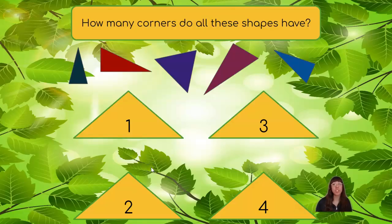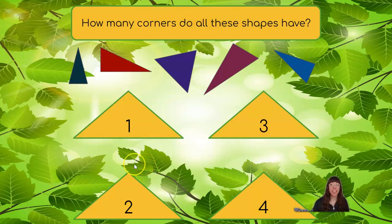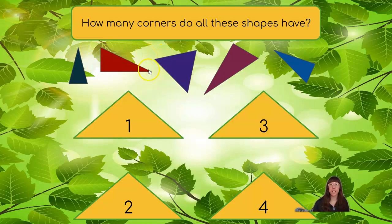How many corners do all of these shapes have? Let's take a look. These shapes are triangles. Triangles have one, two, three corners. If we count the next one, we can see that it also has one, two, three corners. That means that all of these shapes are going to have three corners.